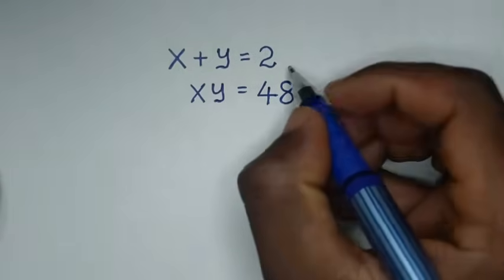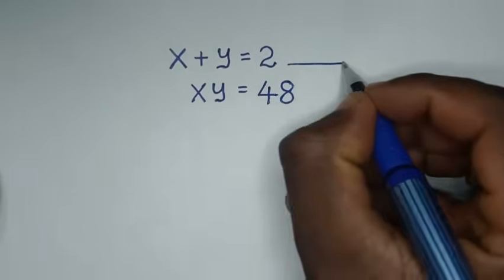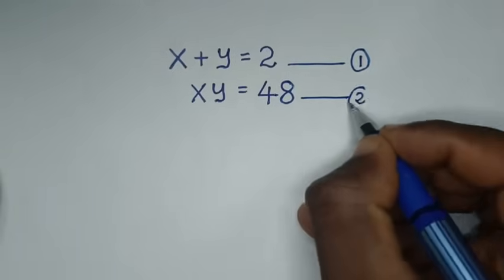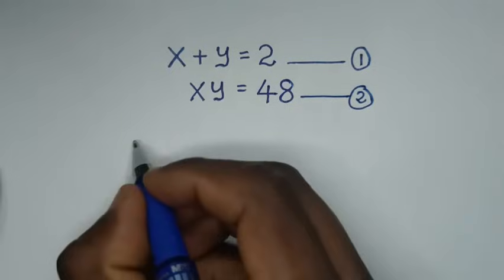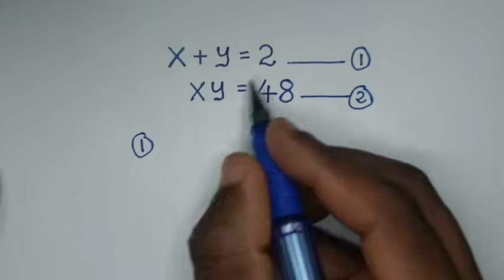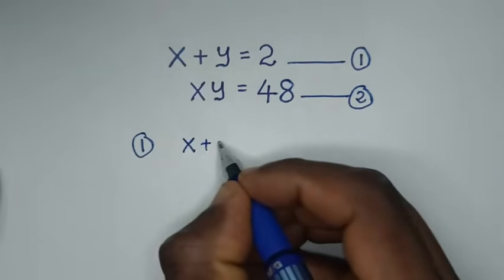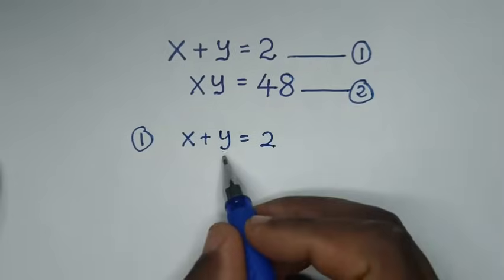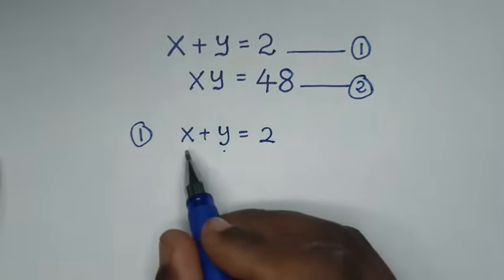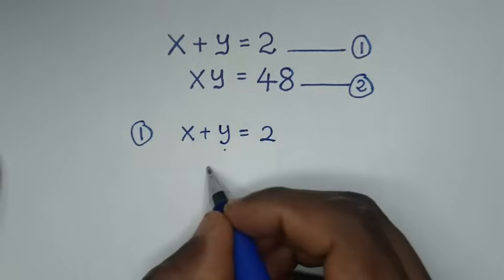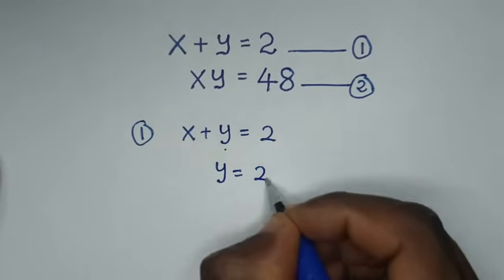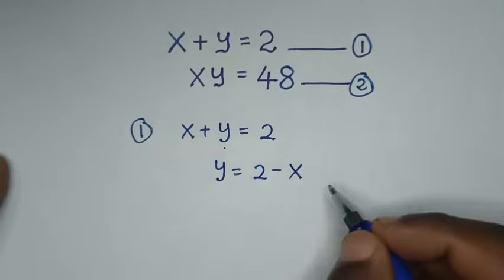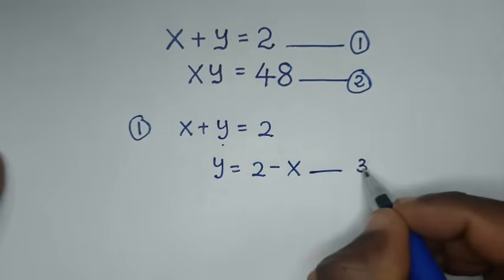In the first step, let's label x plus y equals 2 as equation 1, and xy equals 48 as equation 2. From equation 1, we make y the subject: taking x to the other side gives y equals 2 minus x. Let's call this equation 3.